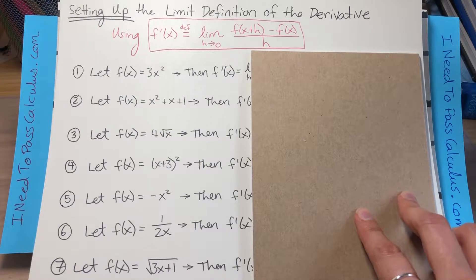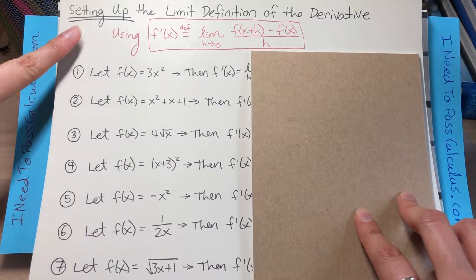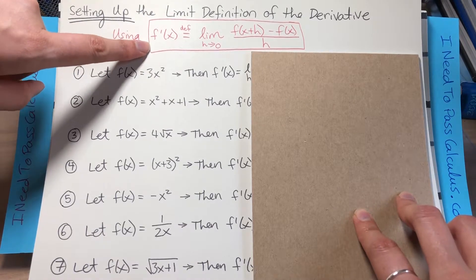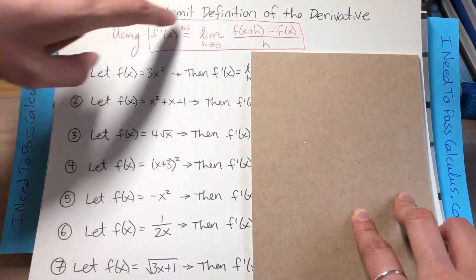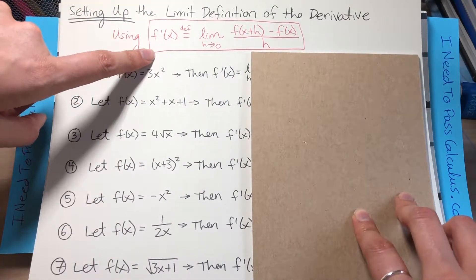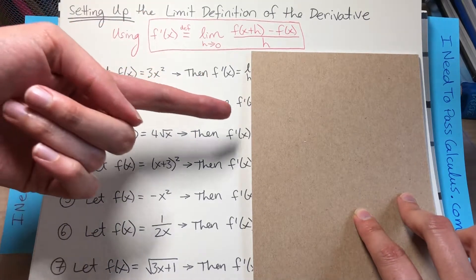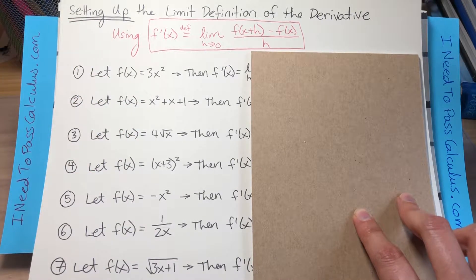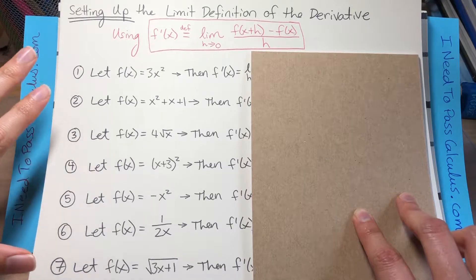Today we're going to do the limit definition of the derivative. In particular, we're going to focus just on setting up the limit definition of the derivative. This is probably the most common limit definition of the derivative, the one in the red box. You can pause the video and try to set up this limit definition of the derivative for each of these functions. It's a completely separate problem to actually take it all the way, simplify through, and get the derivative — we're just going to be setting up.